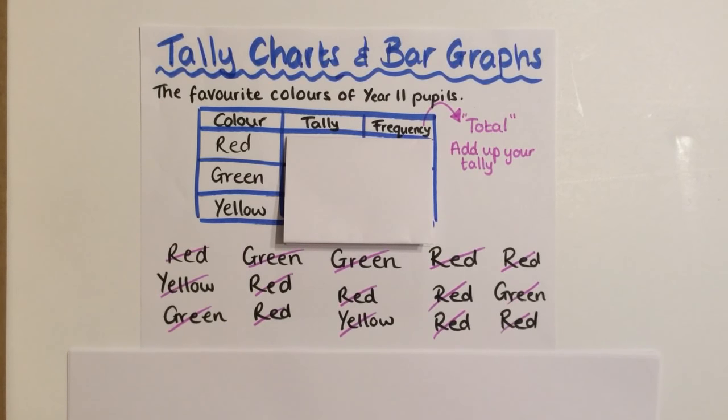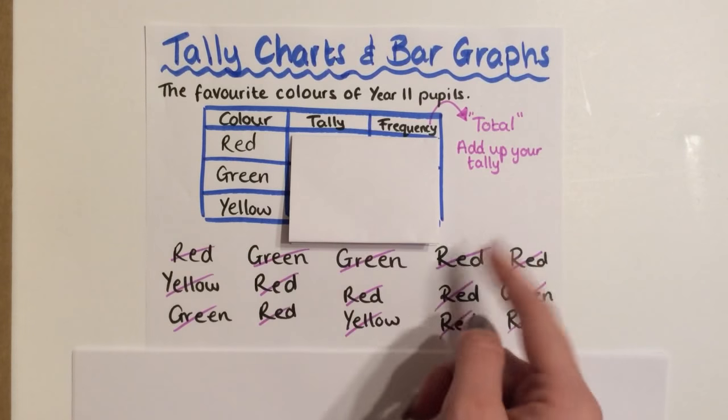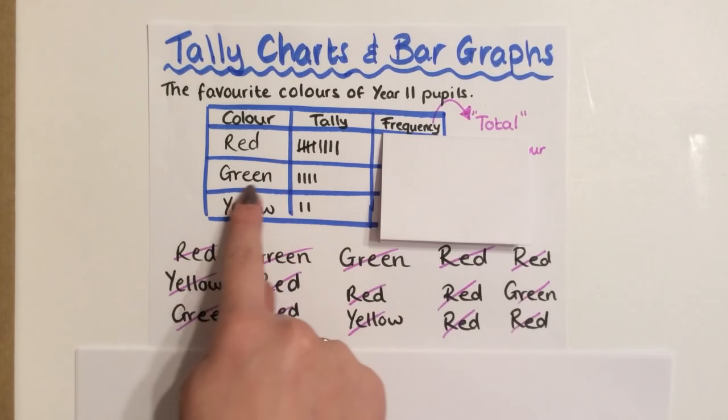Recap on tally charts and bar graphs. So we've got a table with a load of data. I've crossed out each one while I made a tally here.